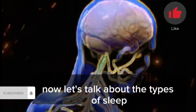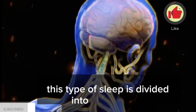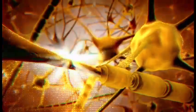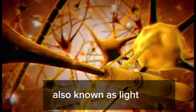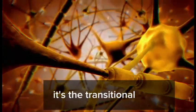about the types of sleep. Type 1: Non-REM sleep. This type of sleep is divided into three stages: N1, N2, and N3. During the N1 stage, also known as light sleep, we can easily be awakened. It's the transitional phase